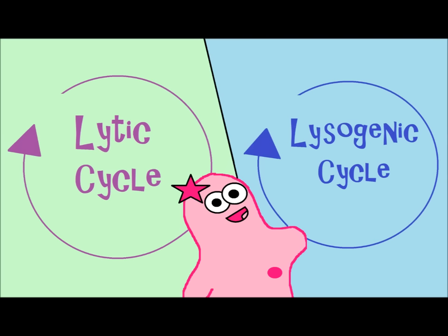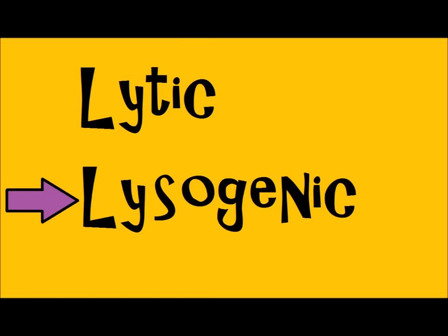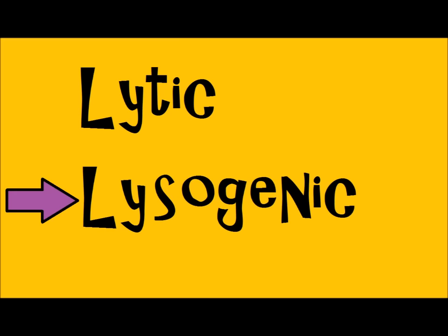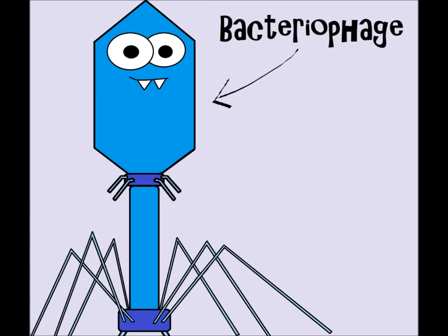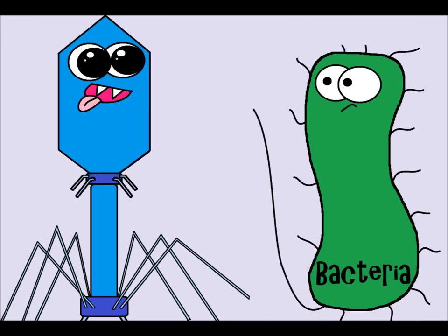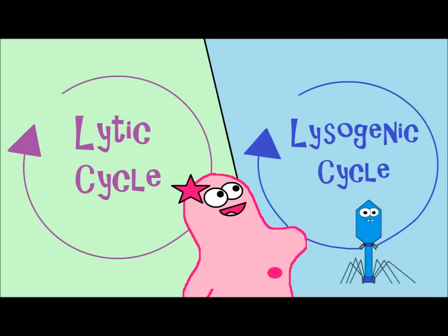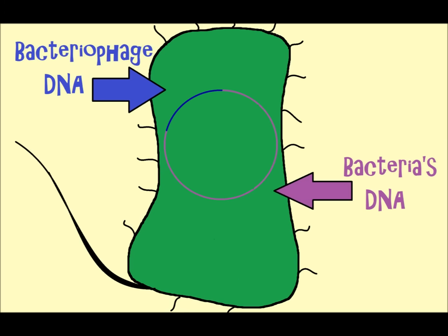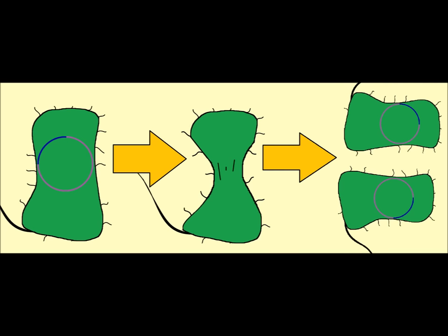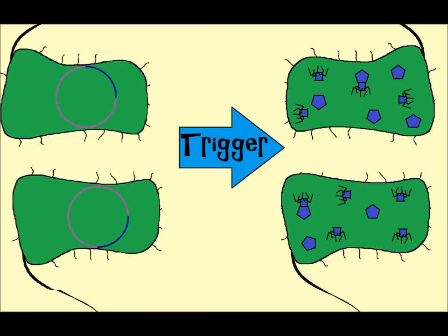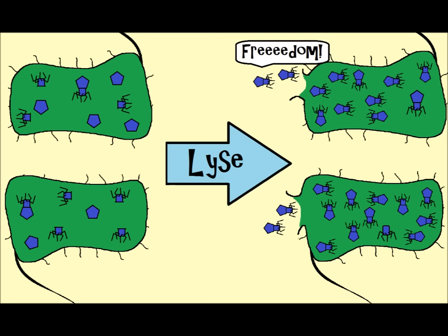The other cycle is called the lysogenic cycle — I like to think of it as the longer, sneaky cycle. A lot of times when discussing this cycle, we're talking about a special kind of virus called a bacteriophage, which is a virus that goes after bacteria. These viruses do something similar at the beginning: they inject their genetic material, but this time the genetic material stays hidden in the host DNA. When the host replicates, it also replicates the viral DNA. Eventually, the virus can be triggered to go into the lytic cycle, start being assembled, and then lyse out of the cell.